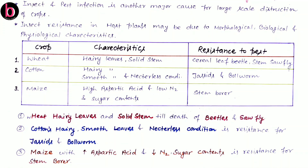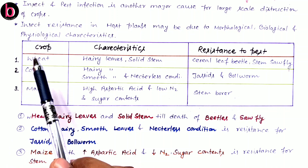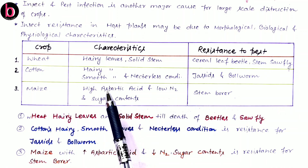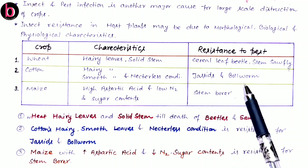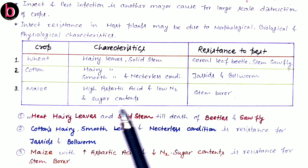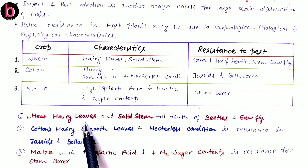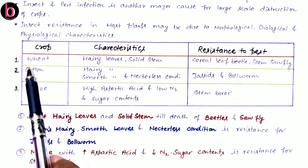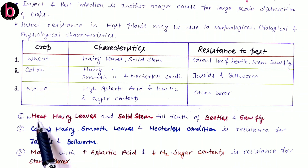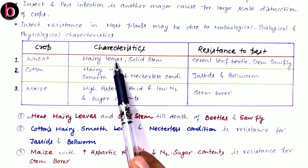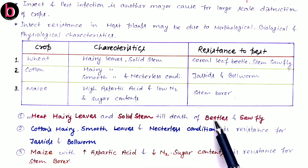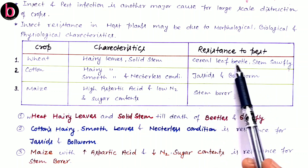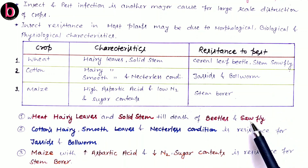Now, what are the tricks to easily memorize all three crops with their respective characteristics and resistance to a particular pest? The first trick for wheat is: 'heat, hairy leaves and solid stem till death of beetles and sawfly.' From wheat we take 'heat'; hairy leaves and solid stem are the characteristics, and this wheat plant carries resistance against cereal leaf beetles and stem sawfly.